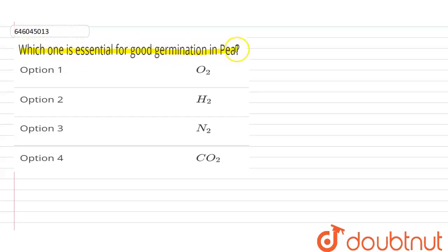Hello students, the question here says which one is essential for good germination in the pea plant. So here we see that the seed germination is what we are going to talk about here.